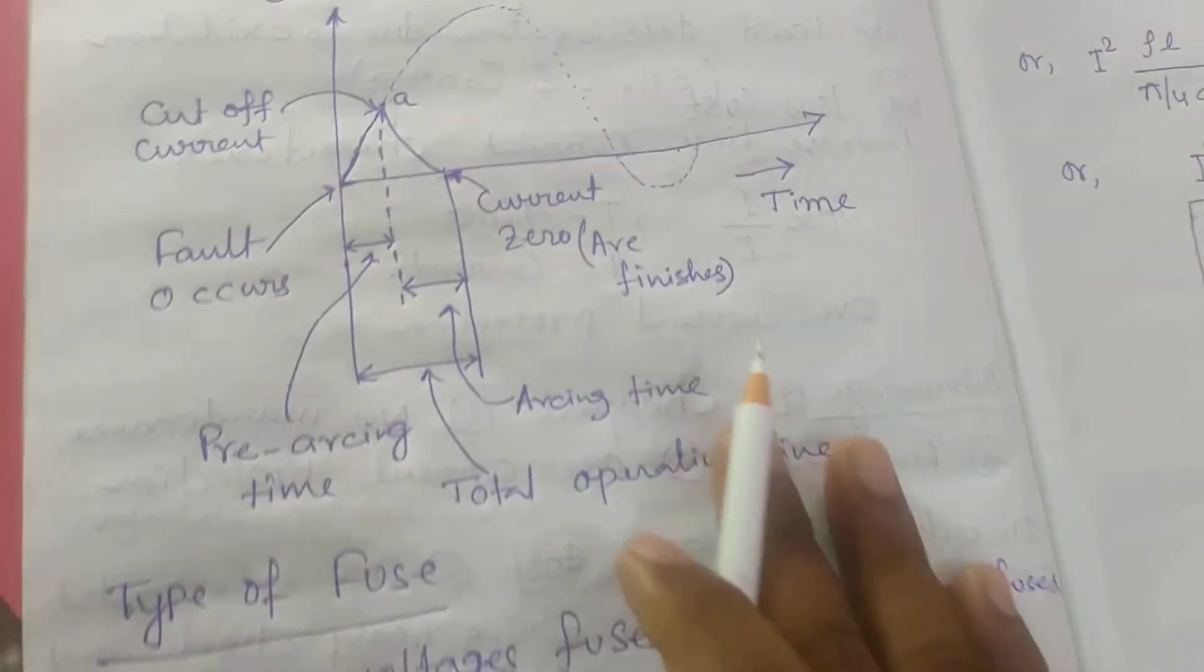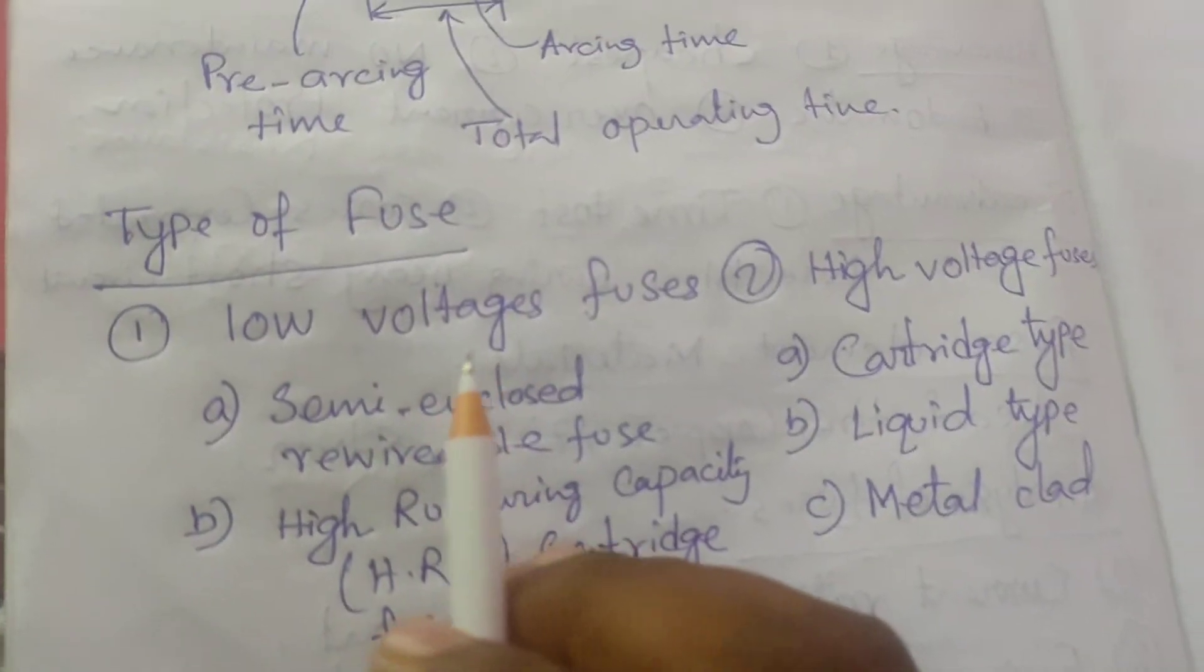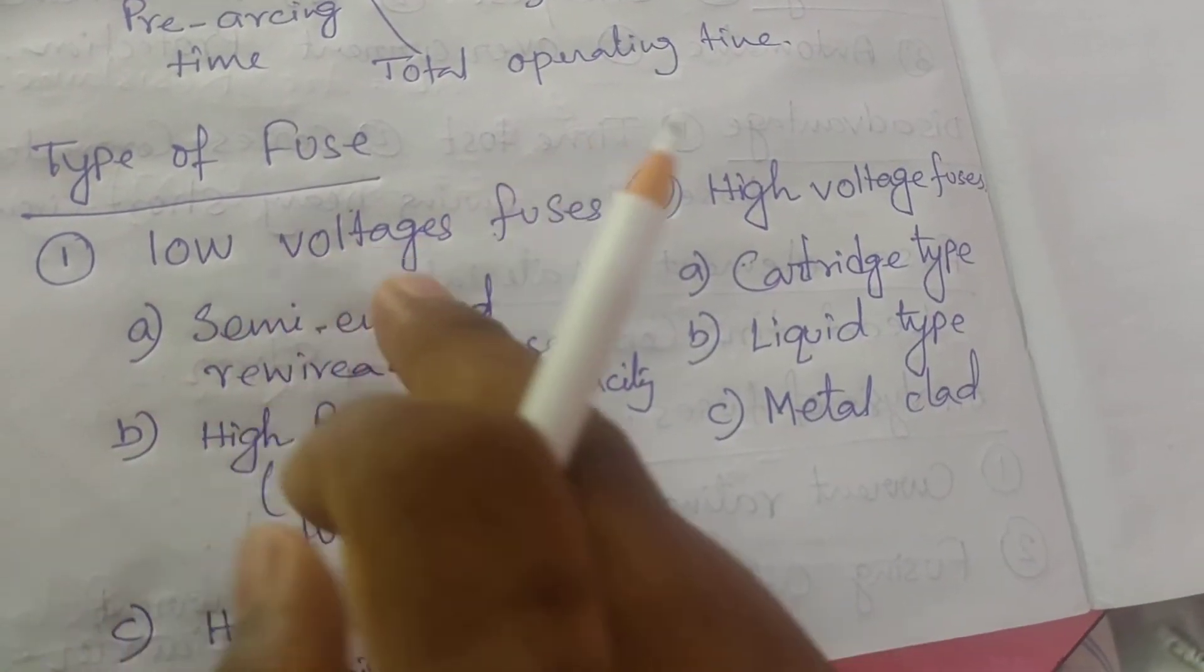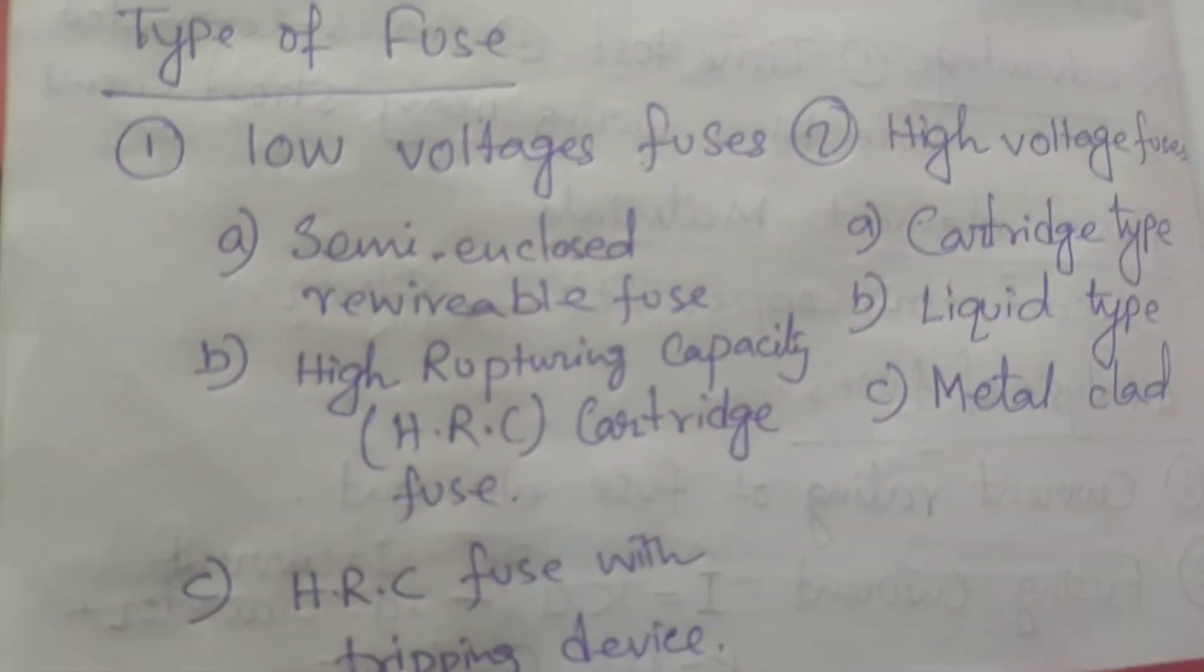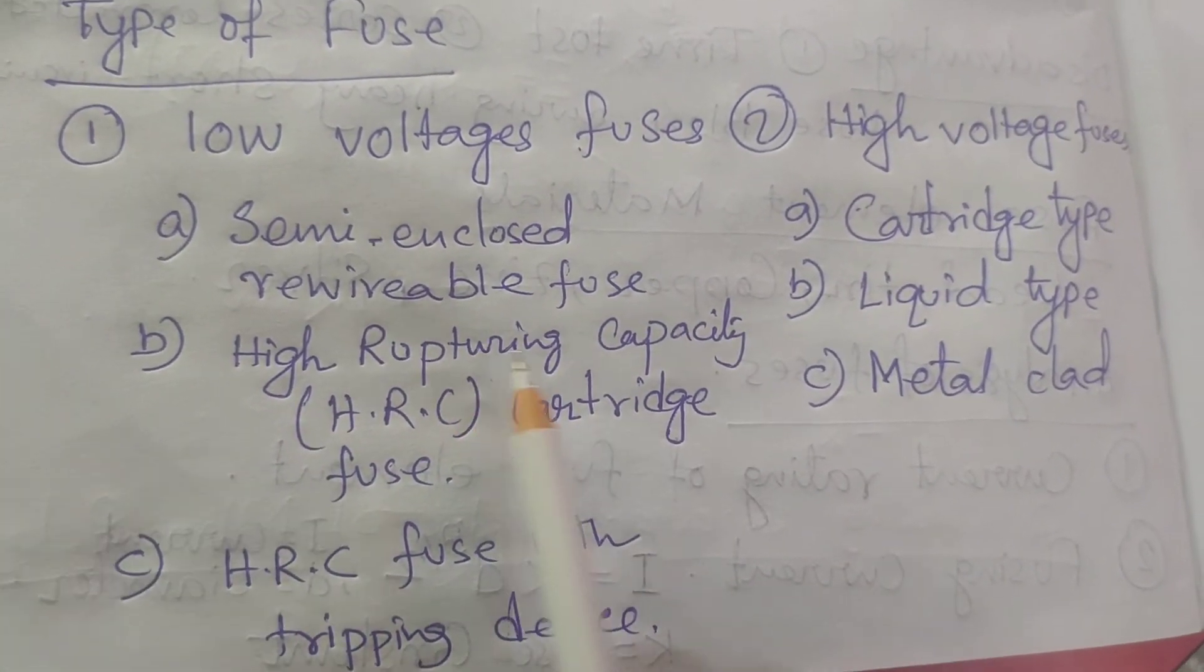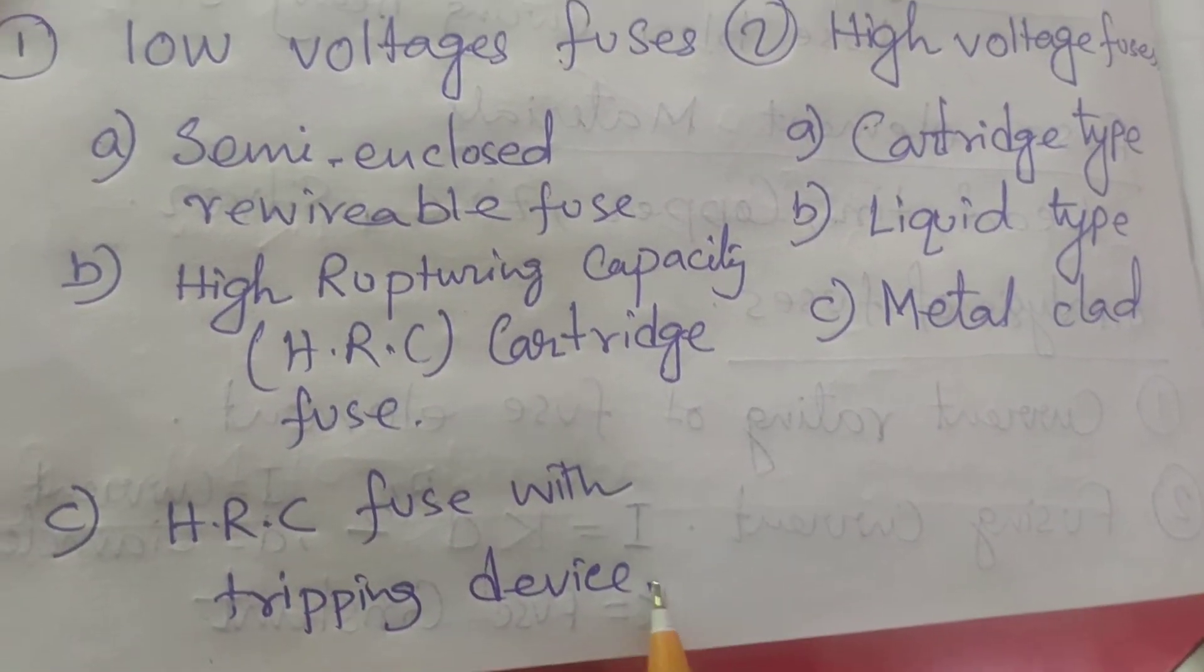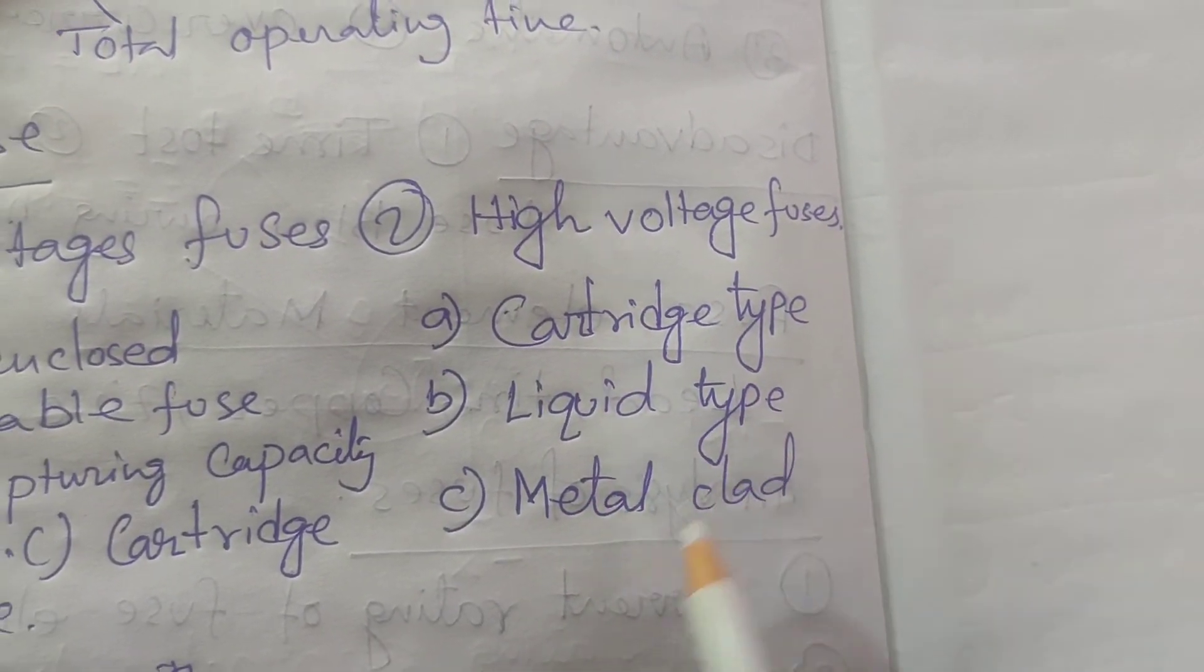Let's discuss the types of fuses. There are low voltage fuses and high voltage fuses. Low voltage fuses include semi-enclosed rewireable fuse, high rupturing capacity HRC cartridge fuse, HRC fuse with tripping devices, etc. High voltage fuses include cartridge type fuse, liquid type fuse, and metal clay type fuse.